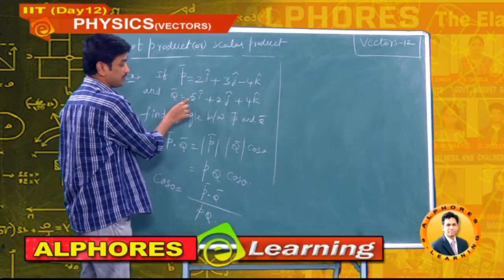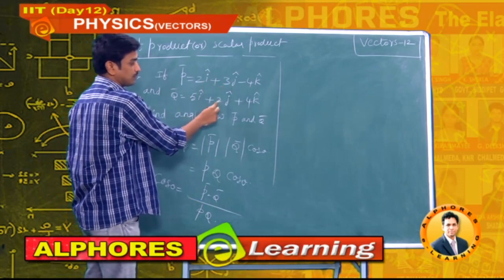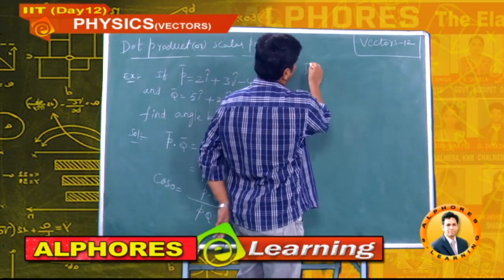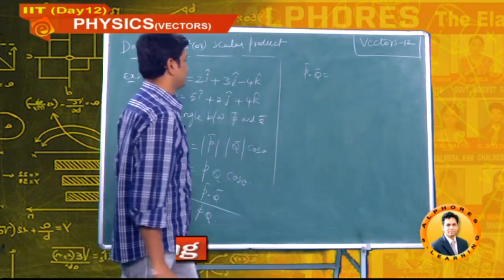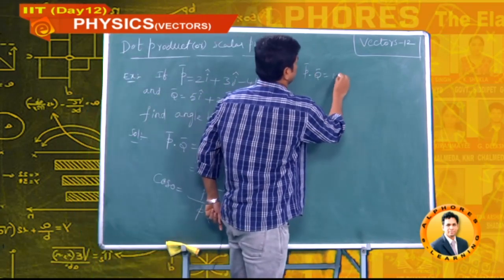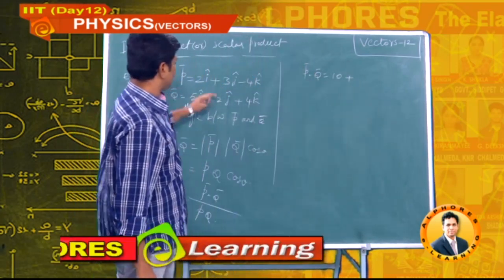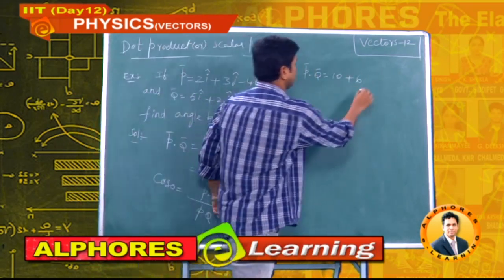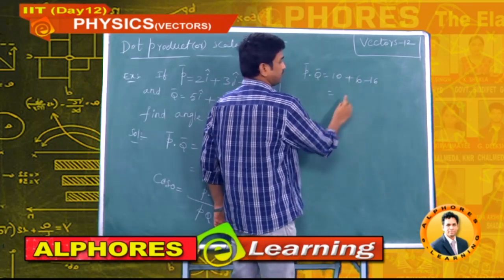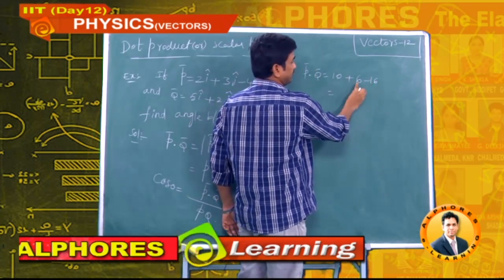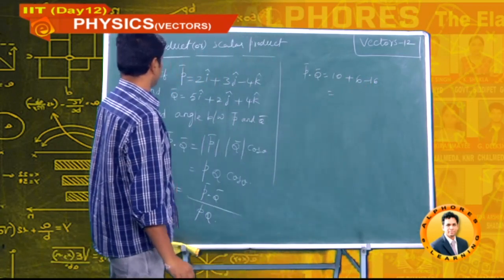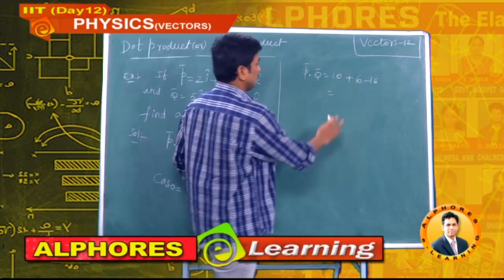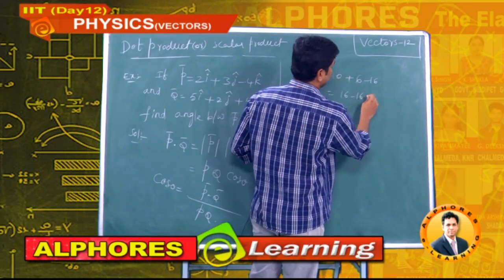Now p̄ · q̄ = (2×5) + (3×2) + (−4×4) = 10 + 6 − 16. So 10 + 6 = 16, and 16 − 16 = 0. The dot product p̄ · q̄ equals 0.